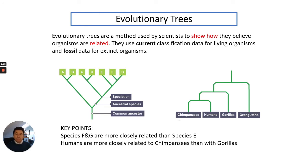A really good way of looking at classification is using an evolutionary tree. They are methods used by scientists to show how they believe organisms are related based on evidence, particularly fossil records as well. They do use current classification data for living organisms and fossil data for extinct organisms. In the diagram here, you can see the common ancestor is at the bottom, and then you get ancestral species and then speciation occurring, getting species at the top: a, b, c, d, e, f, and g.